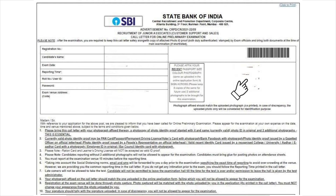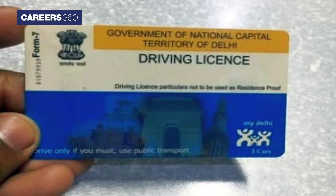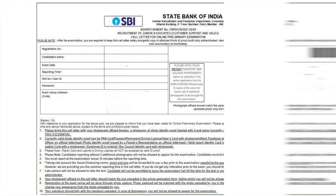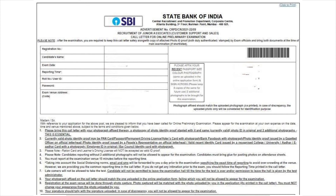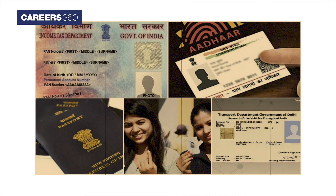Along with the SBI Clerk Admit Card, candidates must carry valid photo ID proof such as a PAN card, driving license, passport, voter ID card, or bank passbook with photograph. Candidates are advised to keep the SBI Clerk Admit Card after the examination along with a copy of the attached photo ID proof, both duly attested by exam officials.